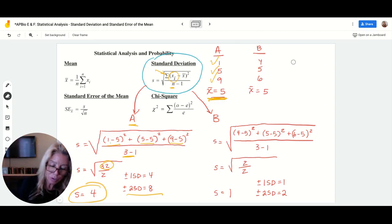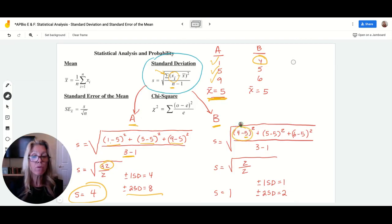So let's compare that to sample B doing the same calculations. I take each data point. I subtract off the average, the mean, and I square that value. Four minus five is minus one minus one squared is just going to be one. So this is one. This is zero. This is one. I added up. It's two, three minus one. That is my sample size minus one is two. Two over two is one. Square root of that is one. That means plus or minus one standard deviation would be one and plus or minus two standard deviations, two times that is two. Where does that plus or minus come from?